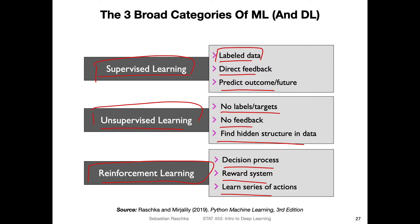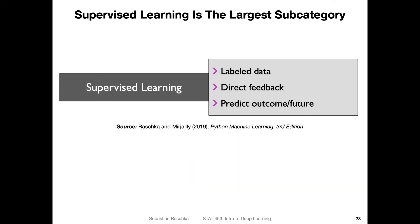We won't be talking about reinforcement learning in this class — it's kind of out of the scope. Nowadays you can also use deep learning for reinforcement learning, which is usually known as deep Q learning. But this is really not in the scope of this class. We will be focusing more on supervised and unsupervised learning, and as you've seen from the introductory slides, we already have plenty of things to talk about.